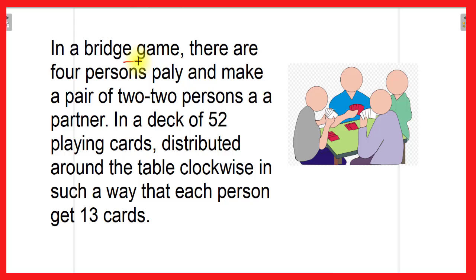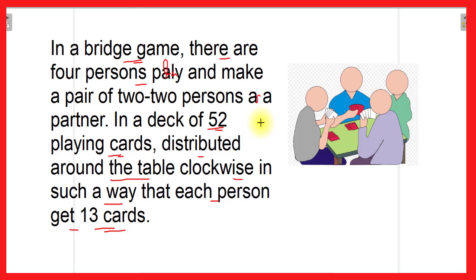Friends, in a bridge game there are four persons who play and make pairs of two persons as partners. A deck of 52 playing cards is distributed around the table clockwise such that each person gets 13 cards. Four players play and there is a pair of two persons as partners, and the 52 cards are distributed around the table in a clockwise direction, with each person getting 13 cards. With this data, you have to answer the given questions.